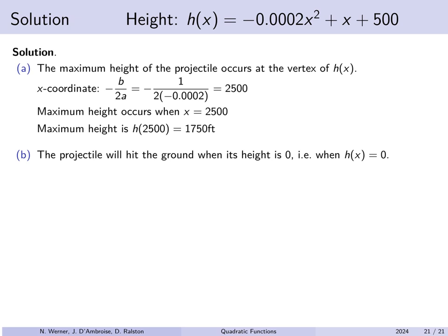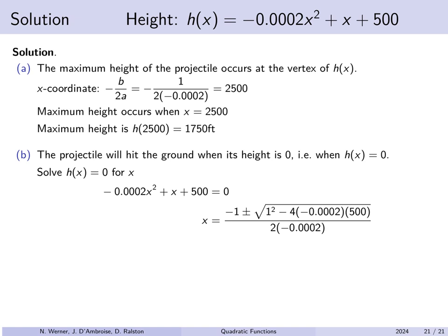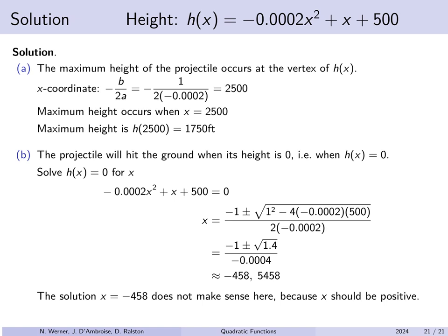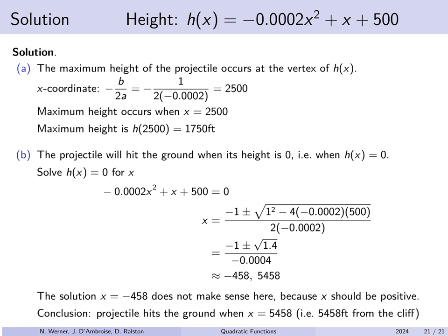The x-coordinate of the vertex is −b/(2a). With b = 1 and a = −0.002, this gives x = 250. Plugging into the function: −0.002·(250)² + 250 + 500 gives a maximum height of 1,750 feet. For the second part, the projectile hits the ground when h(x) = 0. Using the quadratic formula with a = −0.002, b = 1, c = 500, we get two answers: approximately x = −458 or x = 5,458. Since x represents a distance traveled from the cliff, negative distance doesn't make sense here, so the projectile hits the ground 5,458 feet from the cliff.